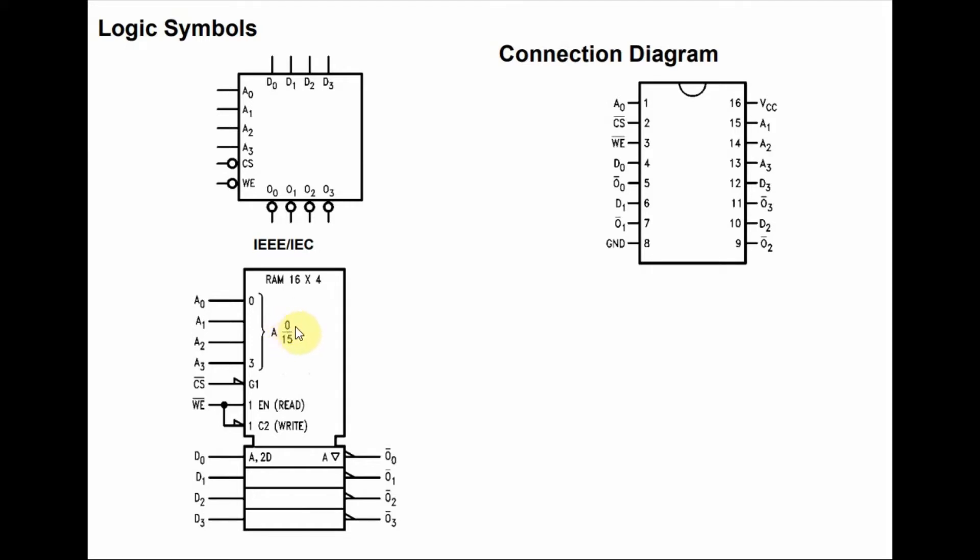The low address of the first location is 0 and the address of the last location is 15. The data lines are D0 to D3 and this is interfaced with the data bus of a microcomputer. Through these lines we can copy a 4-bit number into any one of the 16 locations available in the chip.